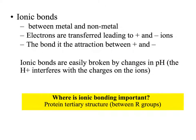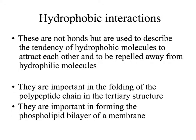Ionic bonds involve positive and negative ions — the bond is the attraction between the positive and negative charges, and ionic bonds are very easily broken by changes in pH. Hydrophobic interactions are not really bonds, but a protein in a hydrophilic environment such as water will fold so that hydrophobic R groups are away from the water and hydrophilic R groups are attracted towards it, determining the shape of the protein.